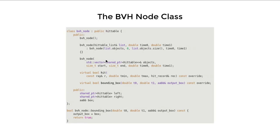To actually have a tree-like Bounding Volume Hierarchy structure, we need a node object that holds pointers to both the left-hand side and the right-hand side child nodes. Each node also contains an axis-aligned bounding box. This box could be implicitly calculated from the left and right children, but the whole point of the BVH is that we cache them - that's why we get the efficiency gain.